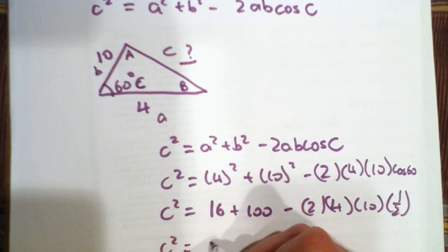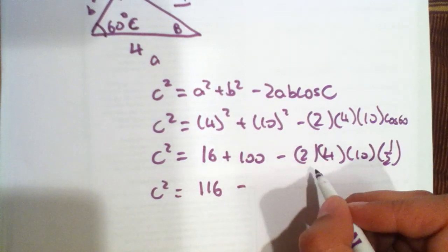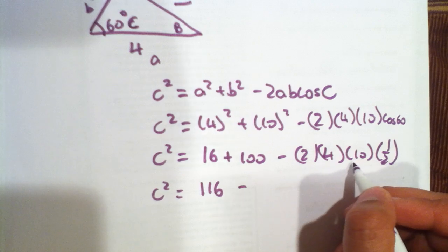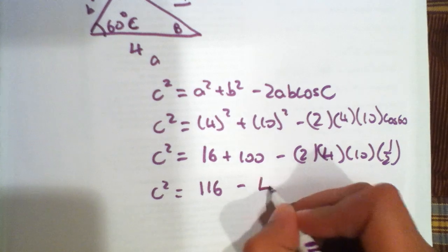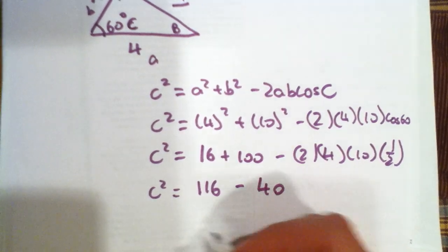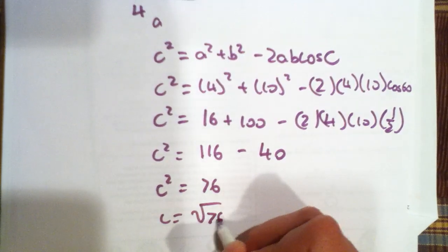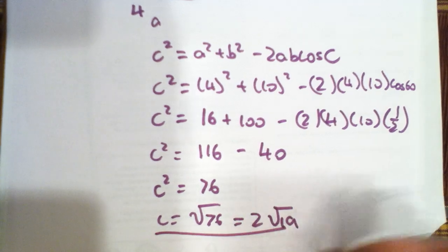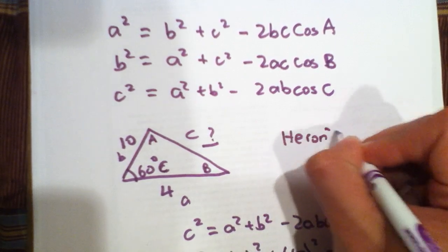So, C squared is equal to 116 minus, this is 8 times 10, which is 80, multiplied by one-half, which is 40. And that is C squared is equal to 76, so C is equal to the square root of 76, or 2 square root of 19. So, we've found the third side. Now, we can find even the area of the triangle using Heron's formula.